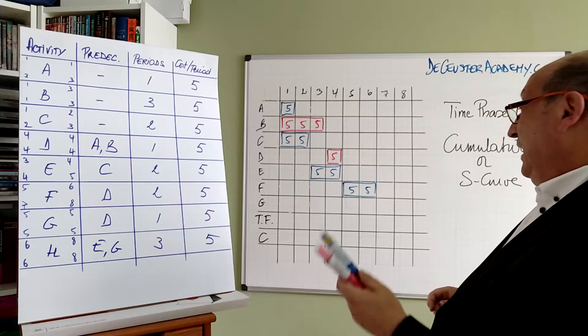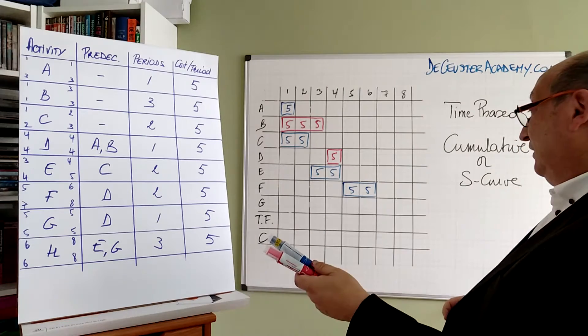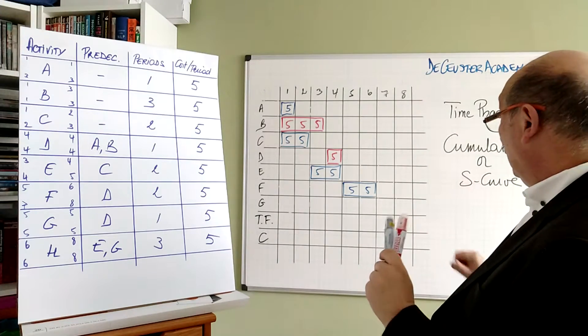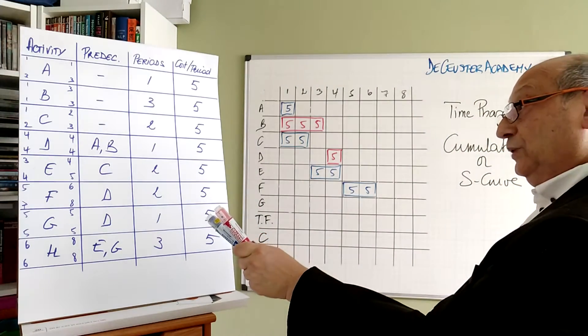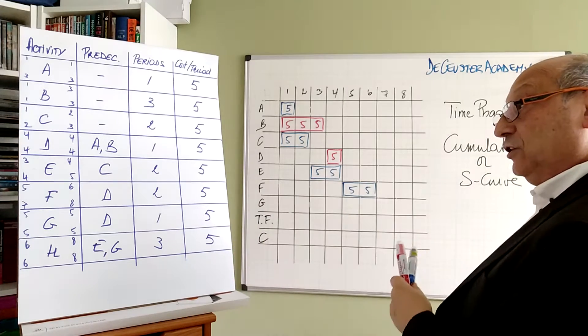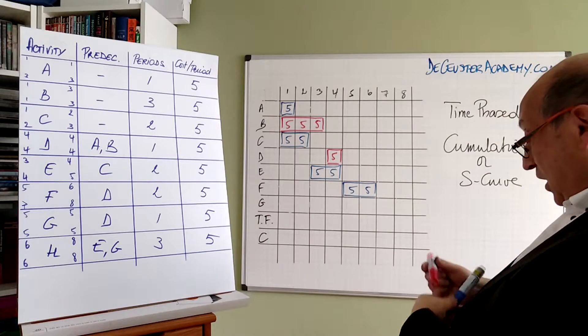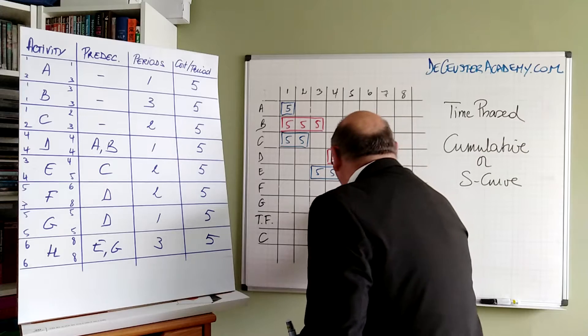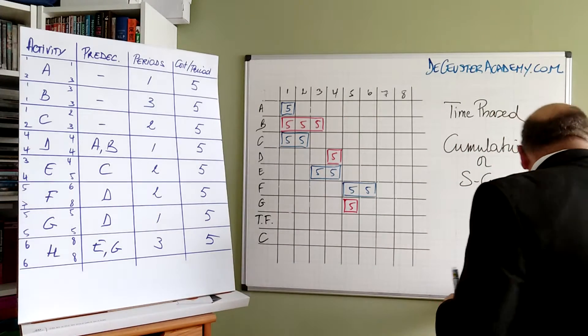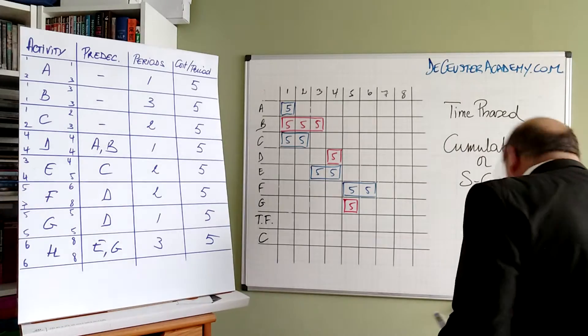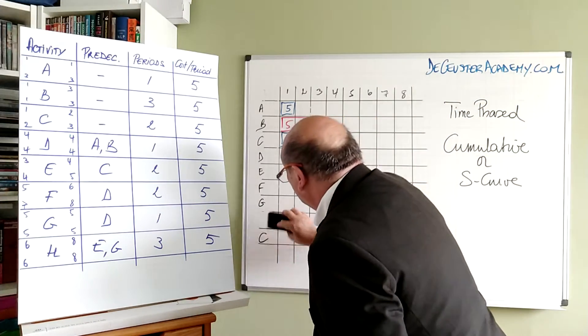G is critical. I forgot H on the table, but I will correct it immediately. So we have G, which is one period long from 5 till 5, but it is critical. So we have 5 here. And now we adjust our value here, which is H.